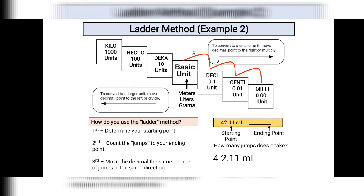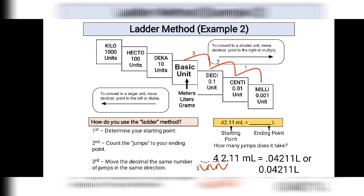This time we go to the left side because we are converting to a larger unit. For 42.11 milliliters, we move the decimal point going to the left: one, two, three. We are missing one decimal place so we put zero there. The answer is 0.04211 liters. Note that the zero to the right of the decimal point is from the conversion, while the zero to the left of the decimal point is added because that is the proper way of writing numbers.